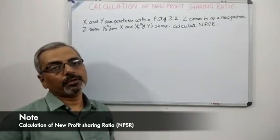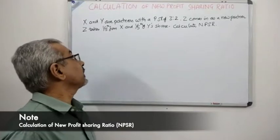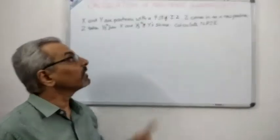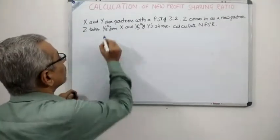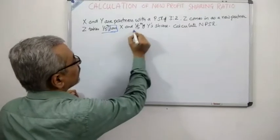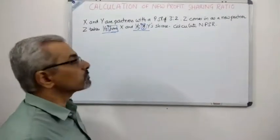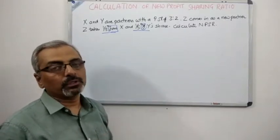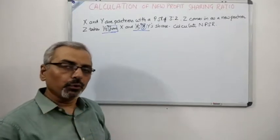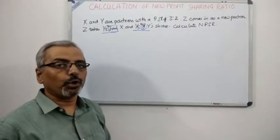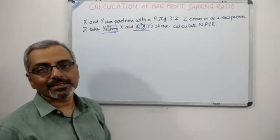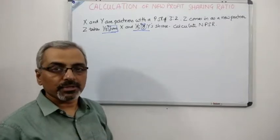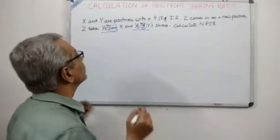Let's start with this sum. There are two partners X and Y, and their profit sharing ratio is 3:2. They have admitted Z as a new partner, and Z has taken one fifth 'from' X and one fifth 'of' Y — so we are using both terms 'from' and 'of'. Whenever we talk about 'from' we do a direct subtraction, and when we talk about 'of' we first multiply and then subtract.